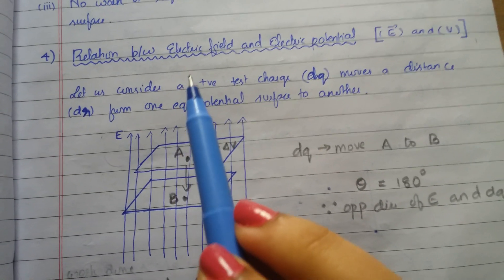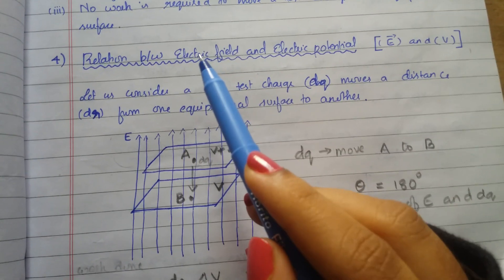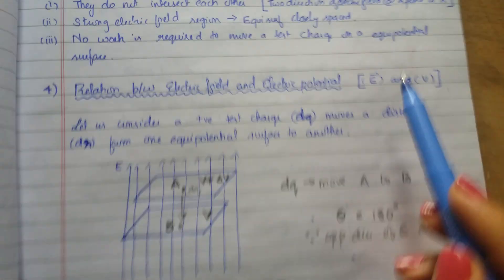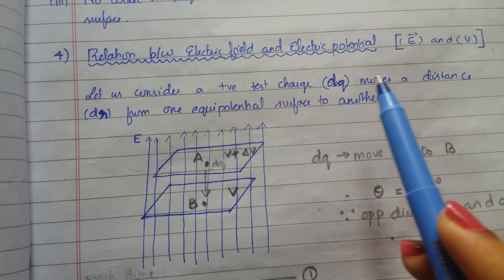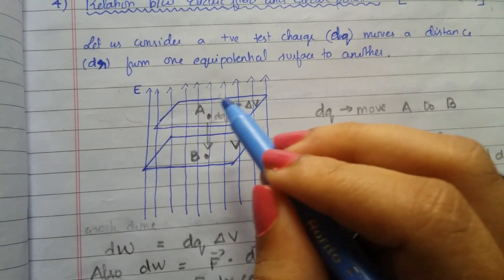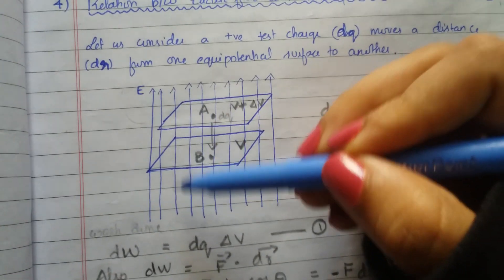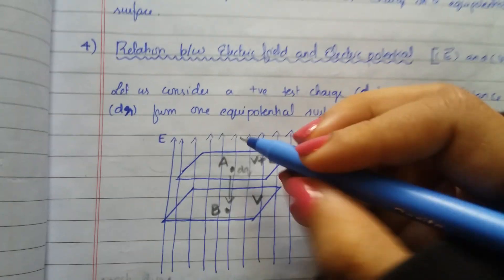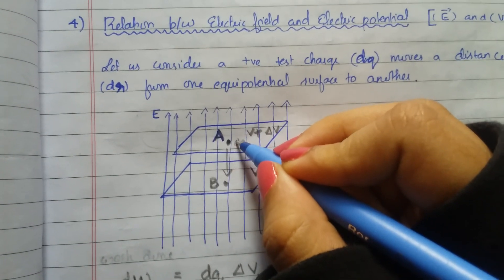Our next topic in this chapter is the relation between electric field and electric potential. Let us consider two equipotential surfaces. A positive test charge dq moves a distance dr from one equipotential surface to another in an electric field. This is the electric field, and this is the direction of the electric field. At point A, on equipotential surface A, there is this charge dq.